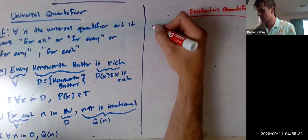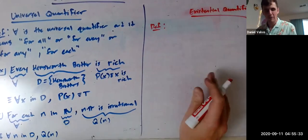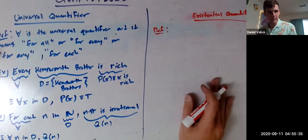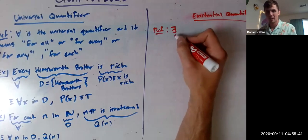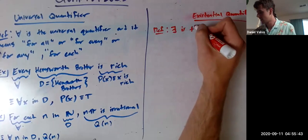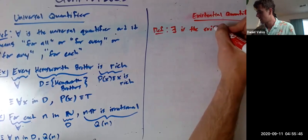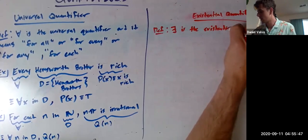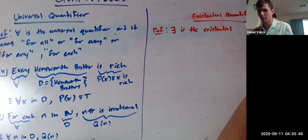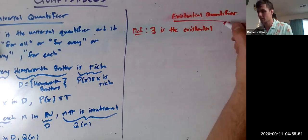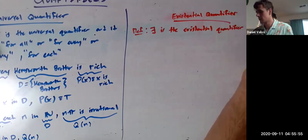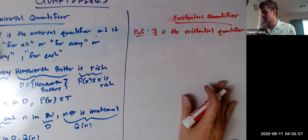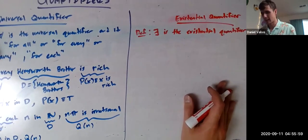Now let's go on to existential quantifier. The definition here is that the backwards E is the existential quantifier, it's the existential quantifier like that.